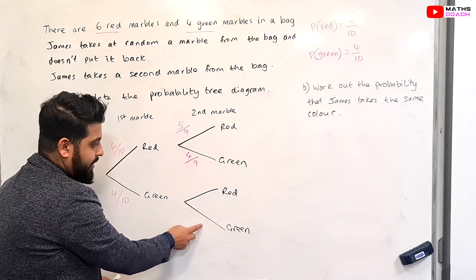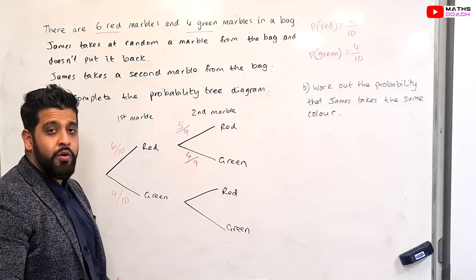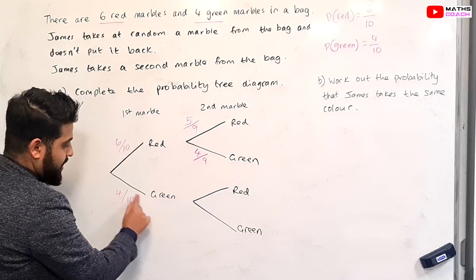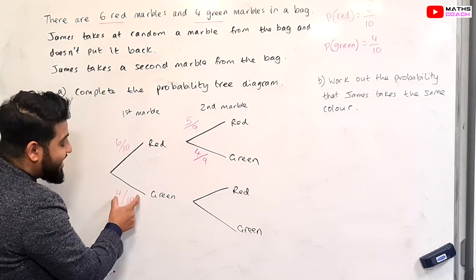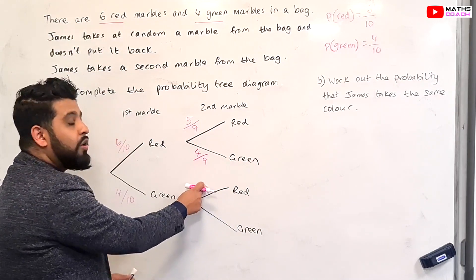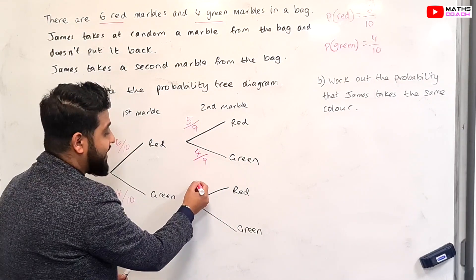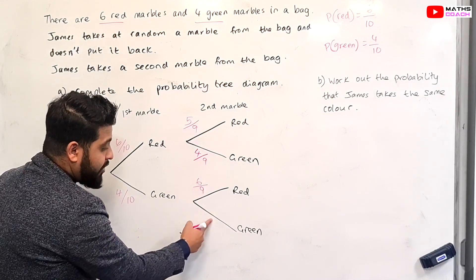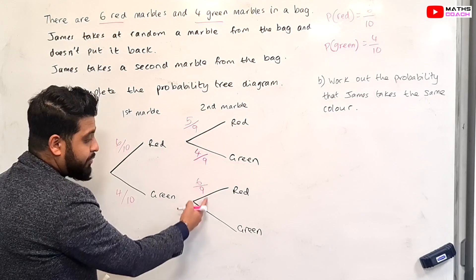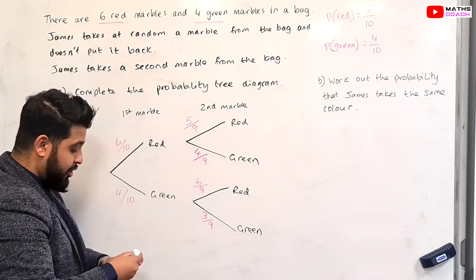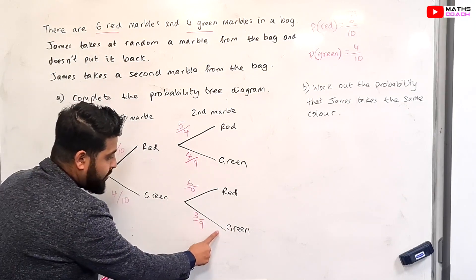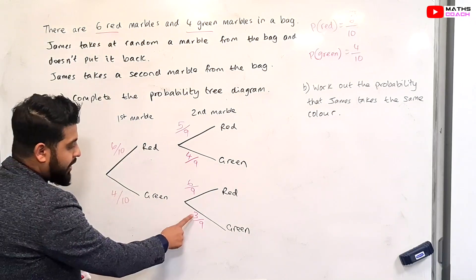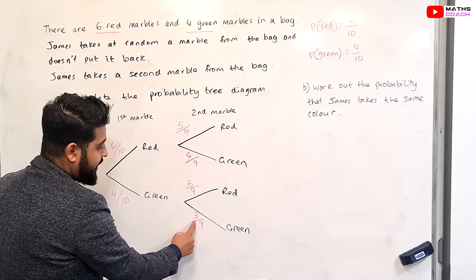Try to figure out the probabilities for the green-first branch at home — pause the video and write it down, then press play again. In this branch, we have chosen a green marble as our first marble. If we've taken a green out of the bag, the number of reds is still the original six, but the total number of marbles in the bag is now nine. So we have six over nine for red. And for green after green: we selected one green from the original four, so we have three over nine.